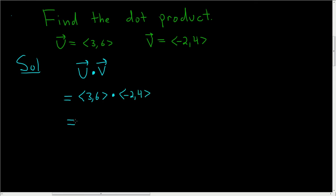And so to find the dot product, you just multiply the first components, so 3 times negative 2. Then you add, and then you multiply the second components, so 6 times 4.